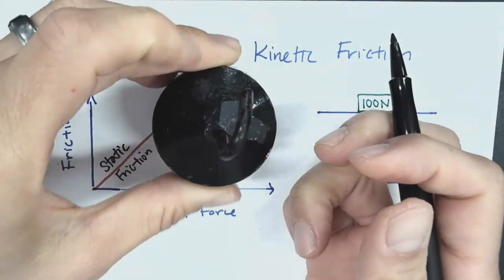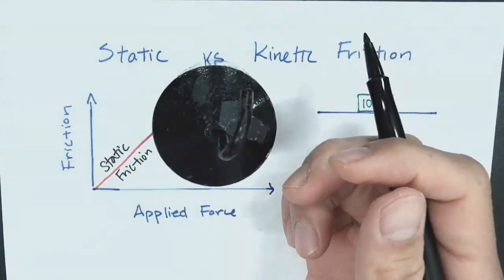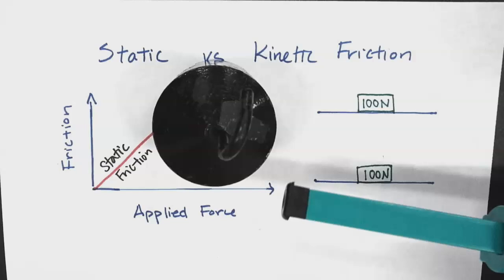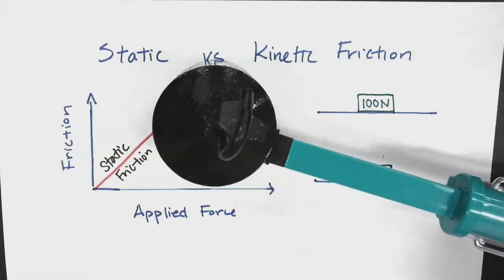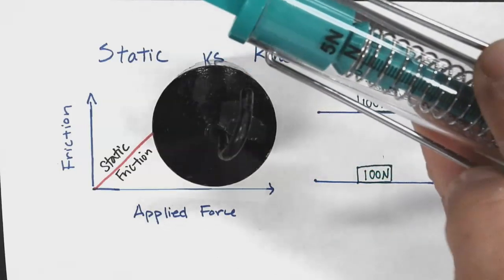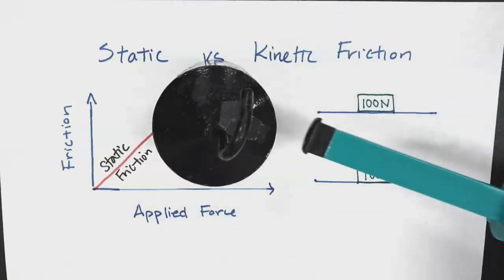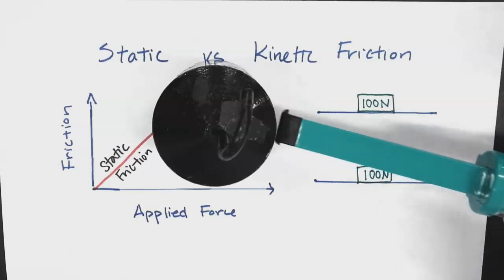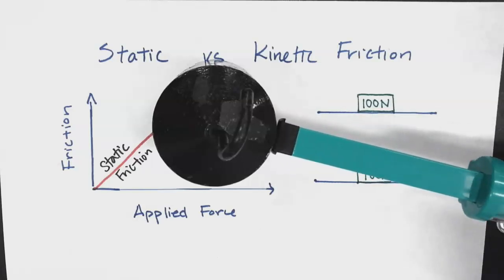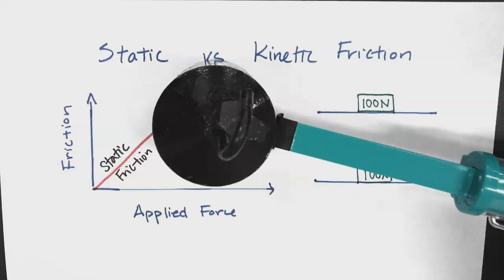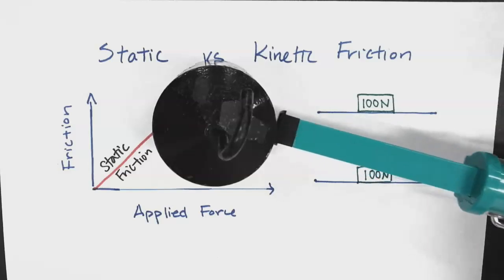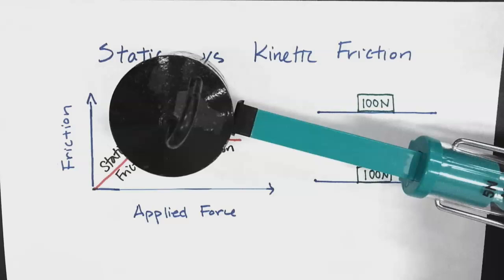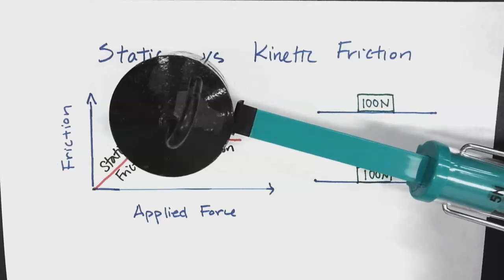Here's another example. Here I have a weight and a spring. I can push on it — notice that I'm pushing on it, but yet it's not moving. So right now, the static friction is equal to the force that I'm pushing it with. If I push harder, there's more static friction until I overcome the static friction.